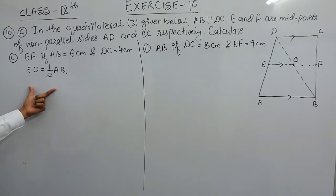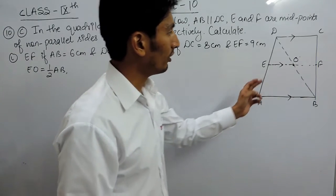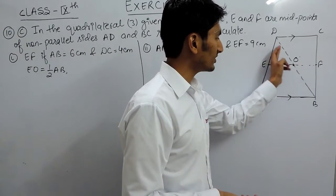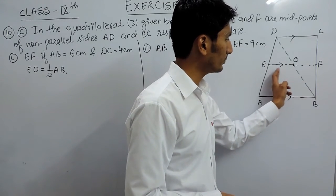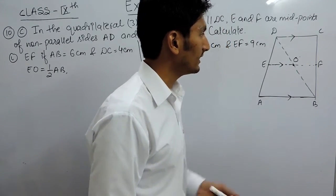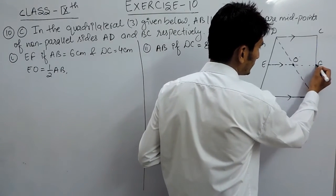This is because midpoint theorem says that if I join the midpoint of two sides in a triangle, this should be parallel to the third side and this should be half of this side.